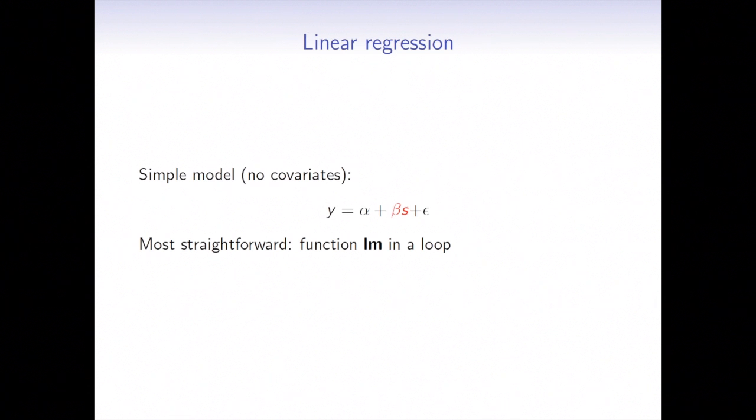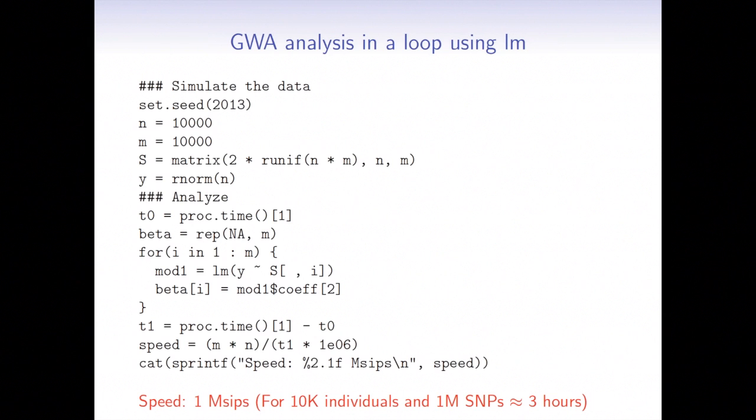In R, the most straightforward way is to use lm function in a loop. In the first slide, I show how we simulated the data and how we're calculating the speed. So first I simulate n individuals, a mini GWAS with 10,000 individuals and m 10,000 SNPs, and I simulate my SNP matrix and my vector of response.